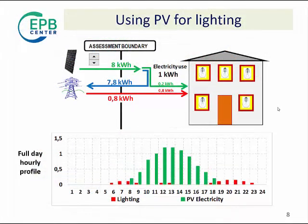The same issue of time mismatch between on-site energy production and use applies also on shorter time scales. If we think about lighting, one might think to use PV production for that. However, most PV production occurs when lighting is not necessary. On a daily time scale, PV production will be concentrated during daylight, whilst lighting will be required in the evening.